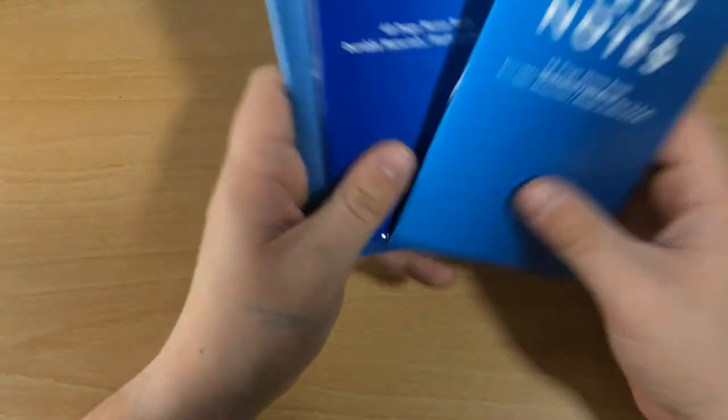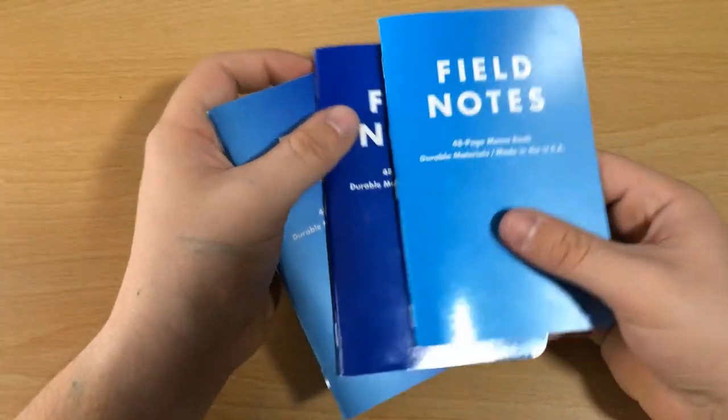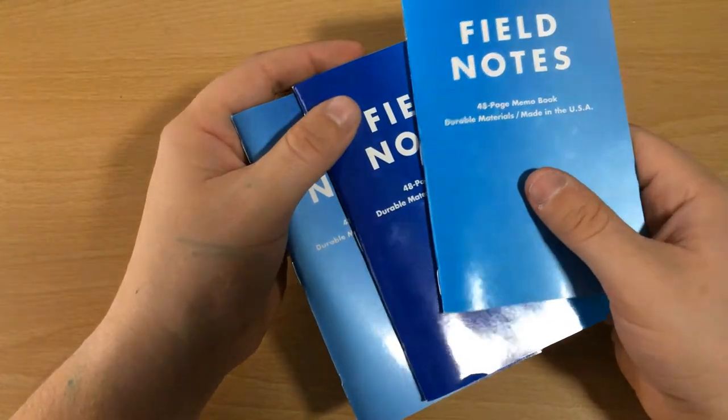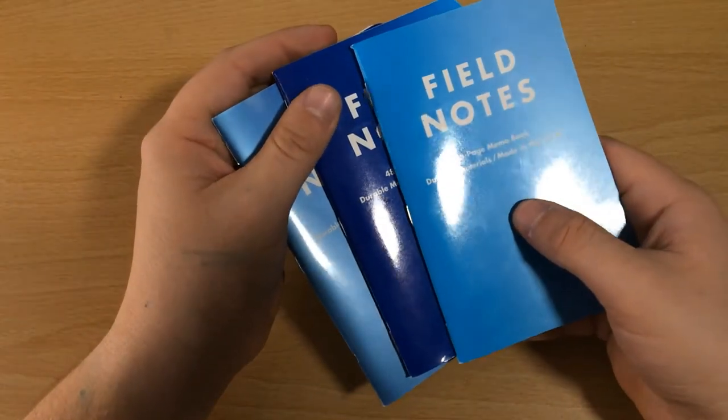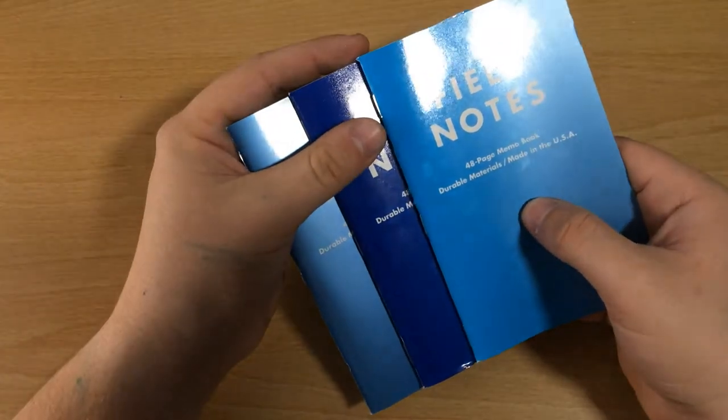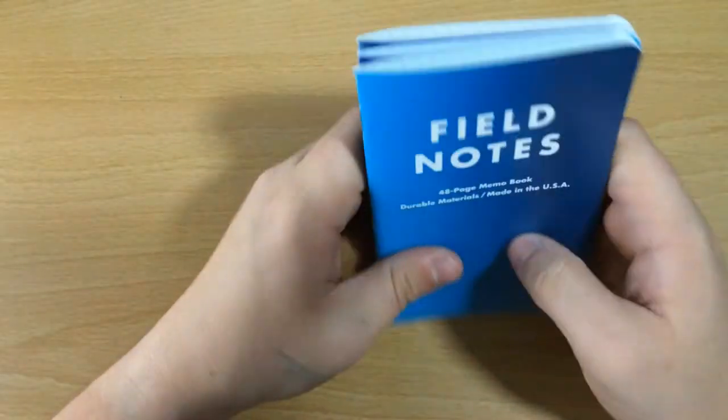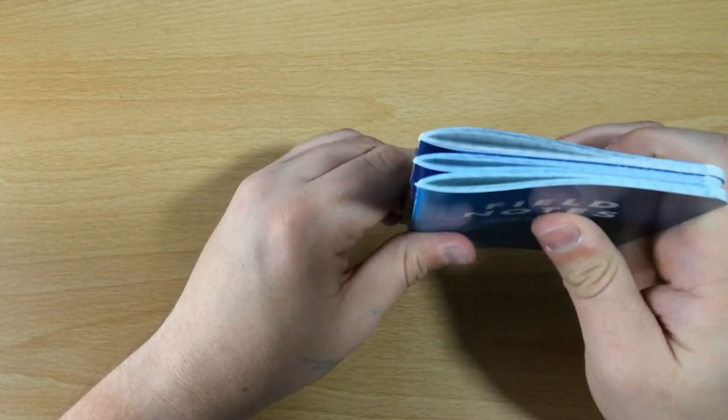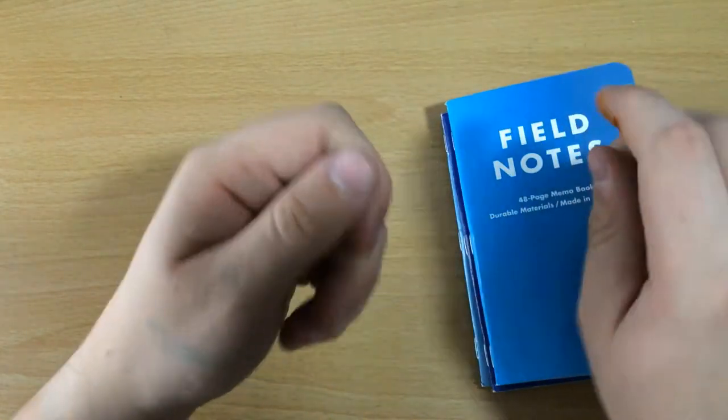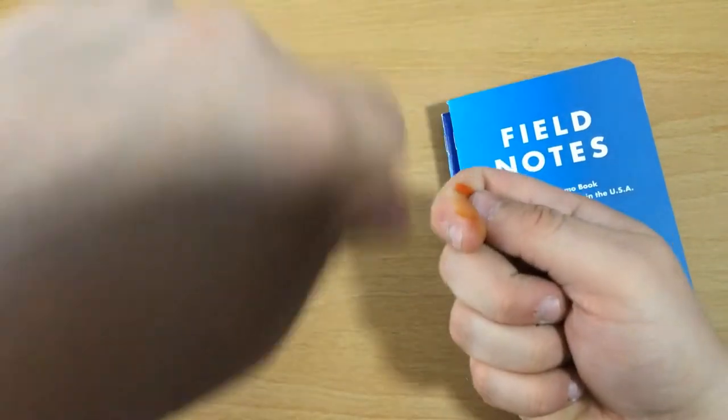And also, Field Notes are usually meant to be used in the field. And it's a little harder to use fountain pens in the field. So just have a regular click pen or a pencil with you at all times. And that's how you take notes in the field. It's kind of hard to use the fountain pen while holding it at a weird angle. It should have to be at the right angle and whatnot.